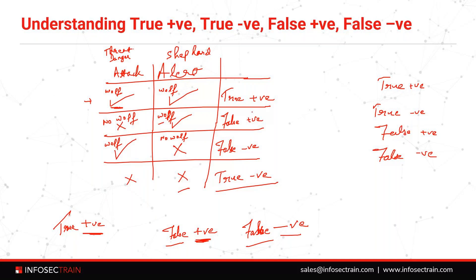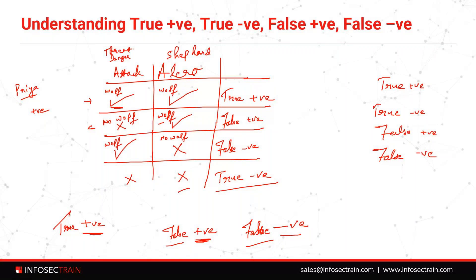A simple real-world example of false positive: for Priya's account, if we got multiple login failure attempts within three minutes, an alert will be generated saying there is an attack going on. But when we investigated, we found it was Priya herself trying to access her own account — she had forgotten her password. That is not an attack. That is an example of a false positive: the alert was generated per the rule, but in reality it was just Priya.